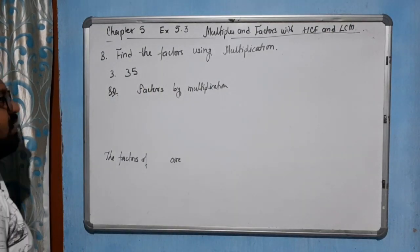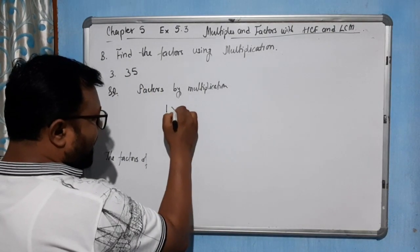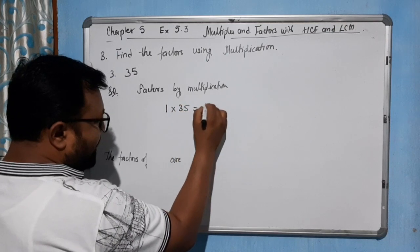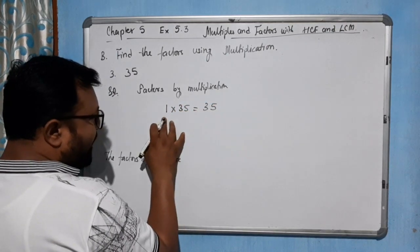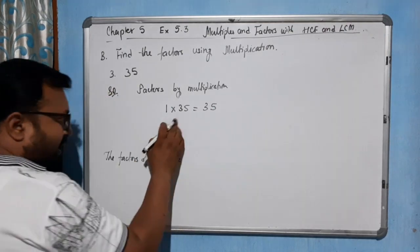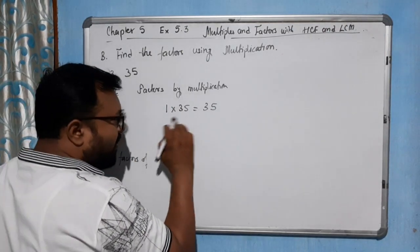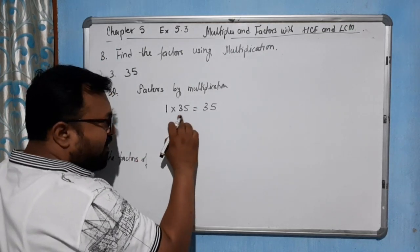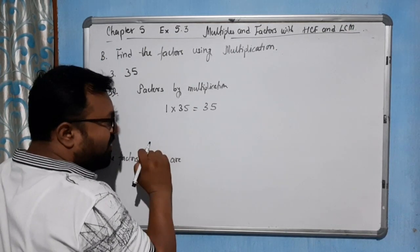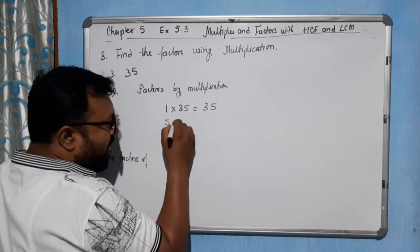Now see here, 35: 1 into 35 gives you 35. By 2, it is not possible because it is an odd number. By 3: the 5, 6, 7, 8 - 8 is not a multiple of 3, so not possible by 3. By 4, also not possible. By 5: 5 times 7 is 35.